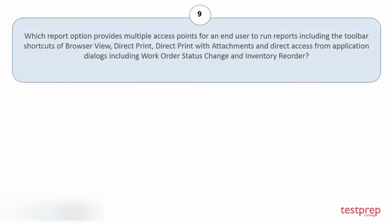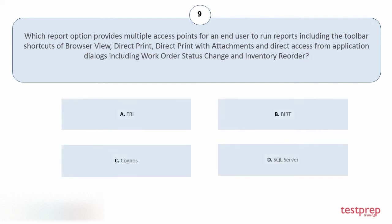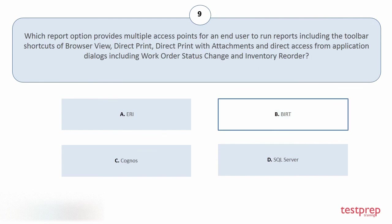Question number 9: Which report option provides multiple access points for an end user to run reports, including the toolbar shortcuts of browser view, direct print, direct print with attachments, and direct access from application dialogues including work order status change and inventory reorder? Your options are: a) ERI, b) BIRT, c) Cognos, d) SQL Server. The correct answer is option b.